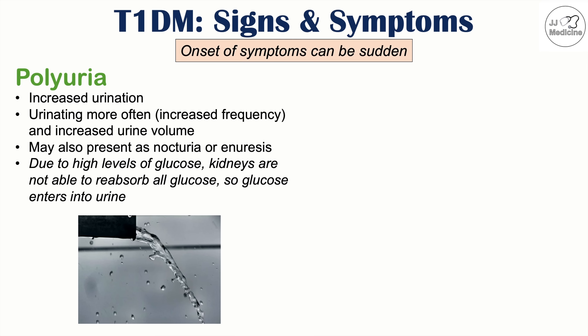The reason polyuria occurs is because of high levels of glucose. Normally, the kidneys reabsorb glucose, as the body wants to hold onto it as an energy source. But when glucose levels are too high, glucose gets into the urine, and water follows that glucose — acting like a sponge — resulting in increased urination frequency and urine volume.